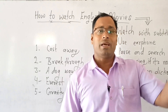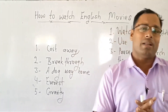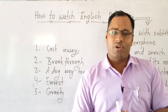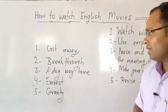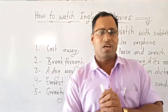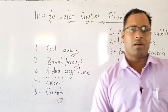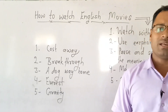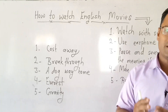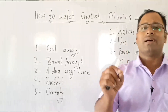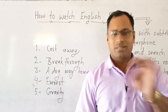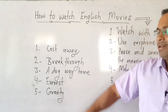Number three: A Dog's Way Home — एक कुत्ता कहीं खो जाता है और वो अपने मालिक के पास लौट कर आता है। ये कहानी आपको emotionally teach भी करेगी और आपकी communication skills को empower करेगी। Number four: Everest — पहाड़ पर चढ़ने के लिए कुछ लोग जाते हैं, उन्हें किन difficulties का सामना करना पड़ता है — ये struggle सिखाएगी और साथ में English structures, vocabulary और कहने का तरीका पसंद आने वाला है।